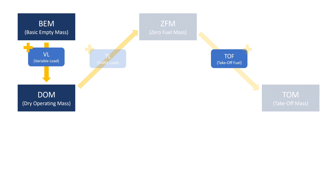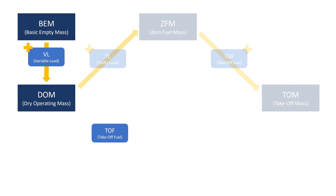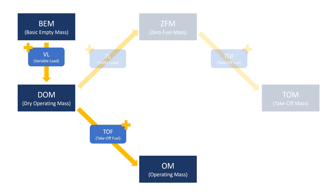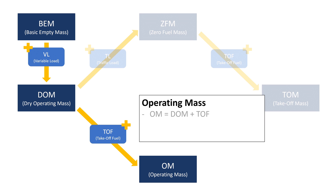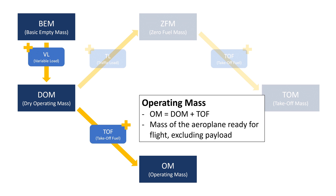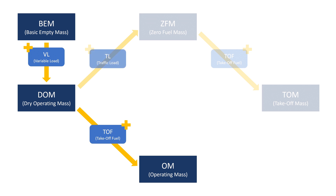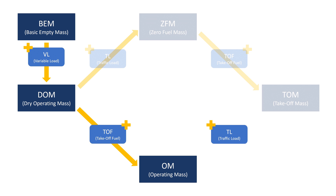Not all masses are covered by this route, however. So let's add the takeoff fuel to the dry operating mass. The result is called operating mass, and it is defined as the aircraft ready to operate a flight without any payload. And finally, adding the traffic load to the operating mass again results in the takeoff mass.